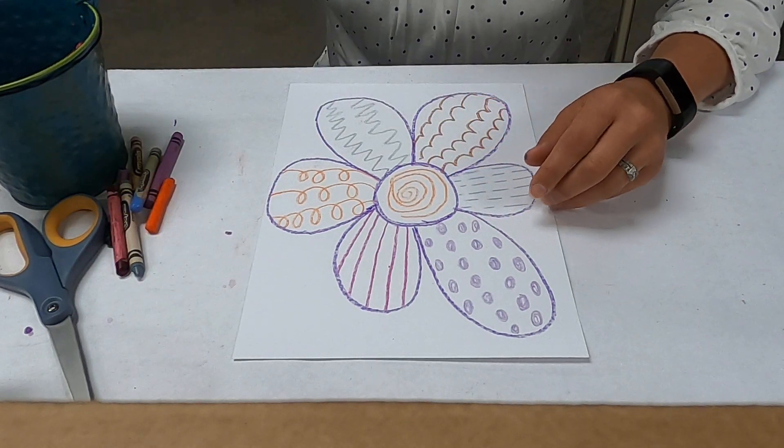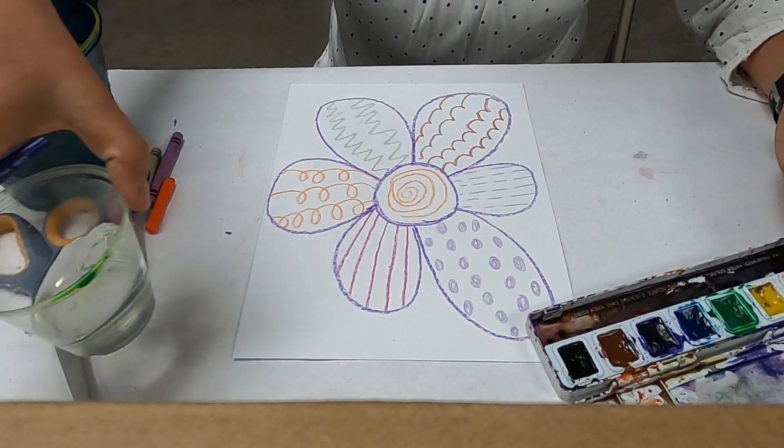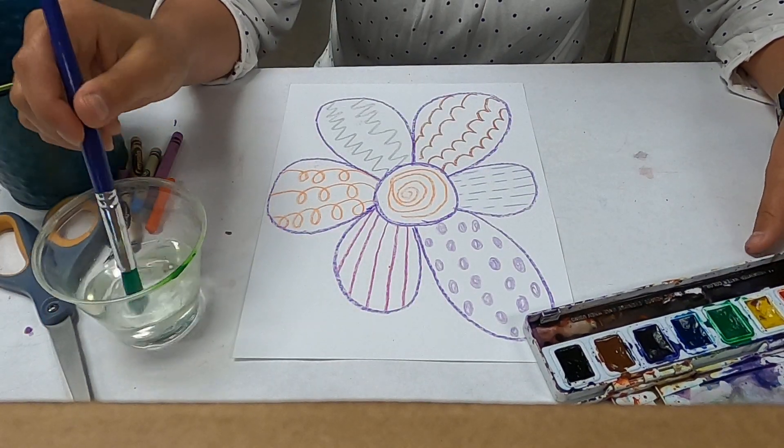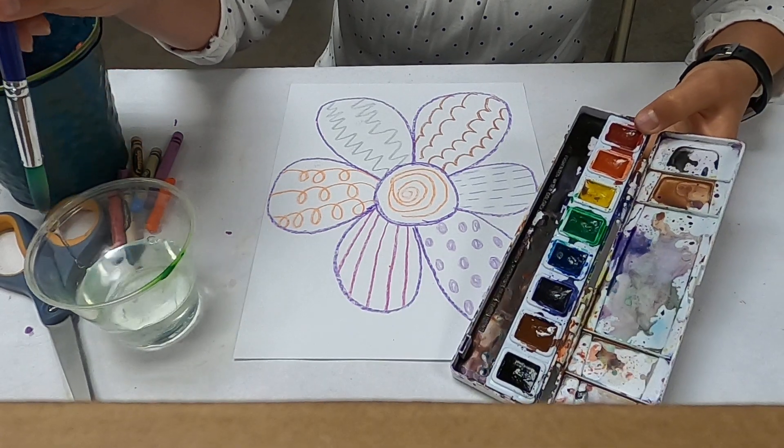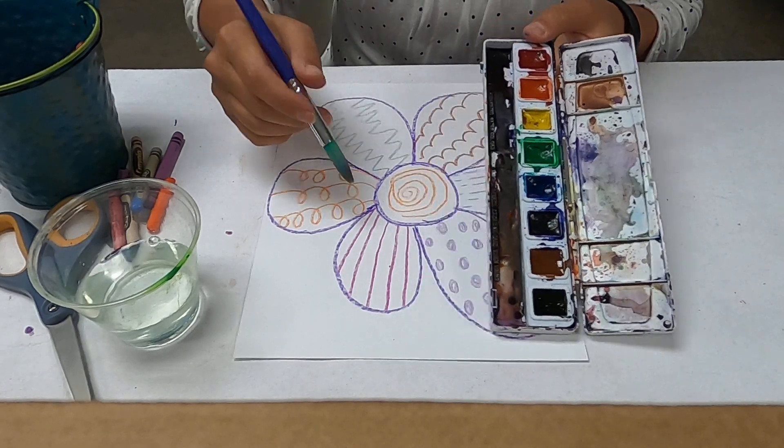So then you take some watercolors. I've got my watercolor pan here and you want your paintbrush. Dip your paintbrush in your water and get a little bit of your watercolor, any color you want. We're going to fill in these petals.